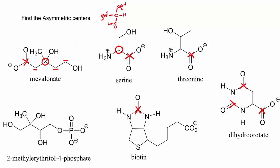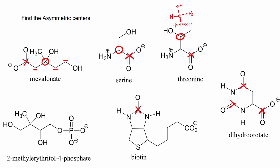This carbon is not an asymmetric center because it has two hydrogens. Looking at another carbon: it has an OH, a methyl group — remember there's a carbon at every end and bend — the rest of the molecule, and the fourth group is the implied hydrogen wherever you don't see a bond shown. That is an asymmetric center with four different groups.